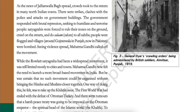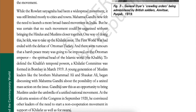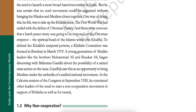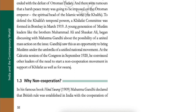Seeing violence spread, Mahatma Gandhi called off the movement. While the Rowlatt Satyagraha had been a widespread movement, it was still limited mostly to cities and towns. Mahatma Gandhi now felt the need to launch a more broad-based movement in India, but he was certain that no such movement could be organized without bringing the Hindus and Muslims closer together. One way of doing this, he felt, was to take up the Khilafat issue. The First World War had ended with the defeat of Ottoman Turkey, and there were rumors that a harsh peace treaty was going to be imposed on the Ottoman Emperor.